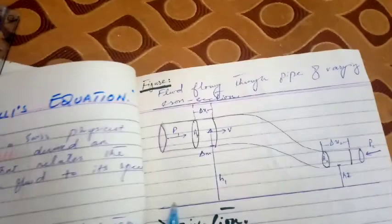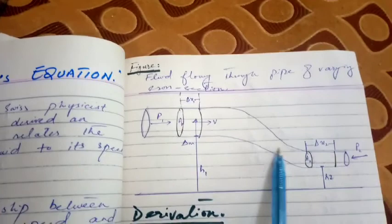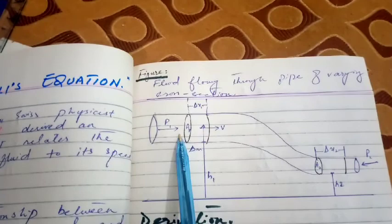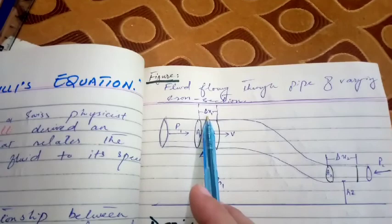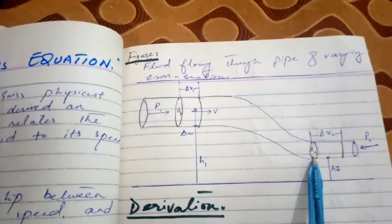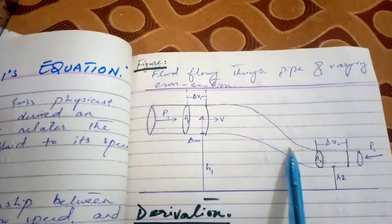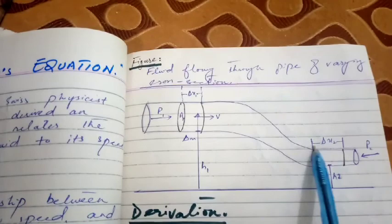Looking at the figure, we have a pipe with varying cross-sections. Towards the left the cross-section is a1 — the wider end — and towards the right it is a2 — the narrower end. The pressure at a1 is p1, the speed of fluid there is v1, and the distance element covered at a1 is Δx1. At the narrower end we have cross-section a2, and the element distance is Δx2.